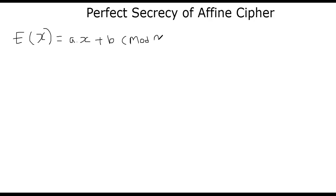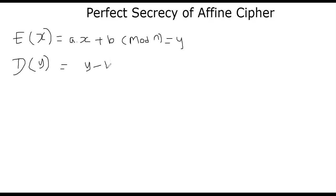And the decryption function — let's say the output is y. How will we decrypt it? The decryption function takes a y, and all it does is first get rid of b, and then get rid of a by computing a-inverse in mod n, which means a must be relatively prime to n. That's basically the definition of affine cipher.